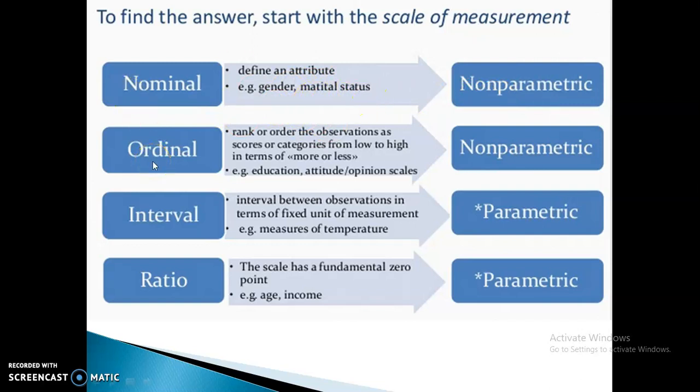Next is ordinal where we talk about rank or order the observations as scores or categories from low to high in terms of more or less. For example, education level, attitude, opinion scales - these all go for non-parametric testing.